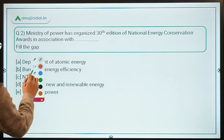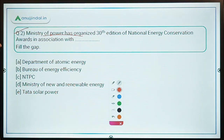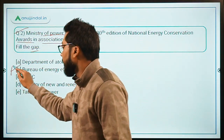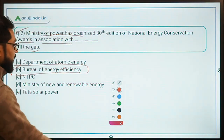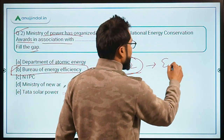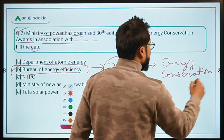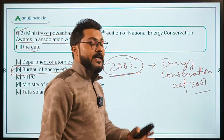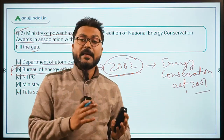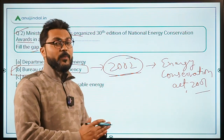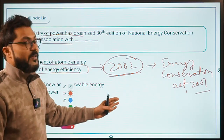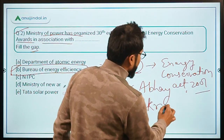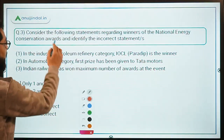Coming back to question two: the Ministry of Power organized the 30th edition of National Energy Conservation Awards in association with — the answer is option B, Bureau of Energy Efficiency. The Bureau of Energy Efficiency was established in the year 2002 under the Energy Conservation Act of 2001. It is a statutory body with the mandate to provide support in policy framing and strategy framing related to the energy sector for the Government of India. Mr. Abhay Bakre is the current Director General of the Bureau of Energy Efficiency.